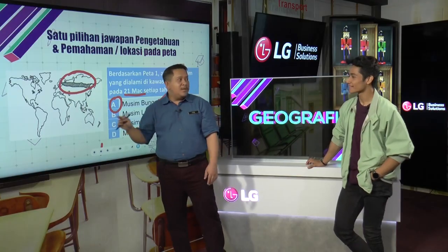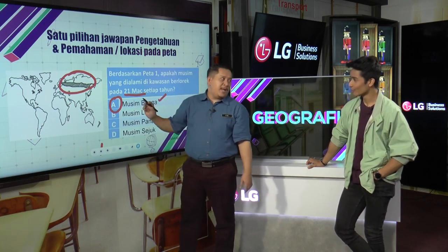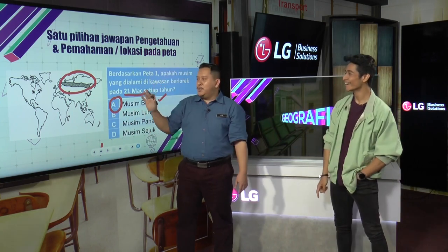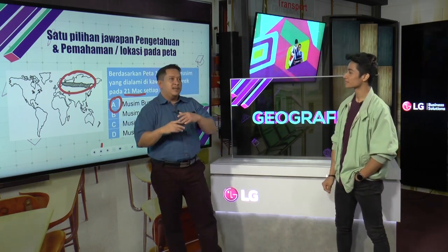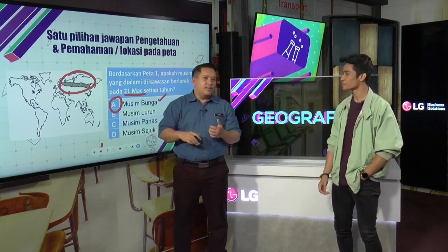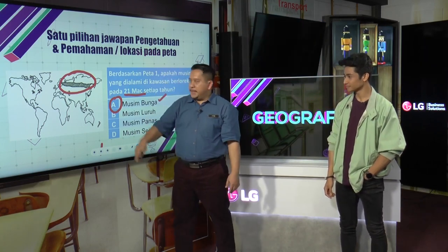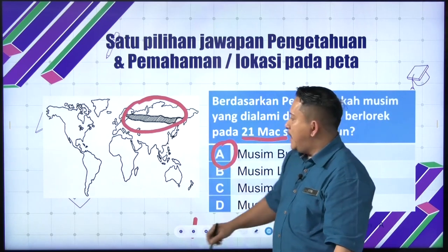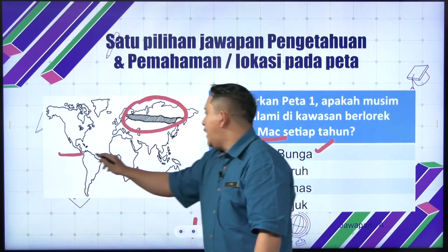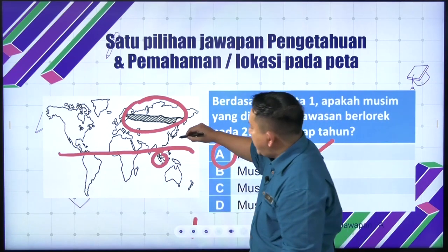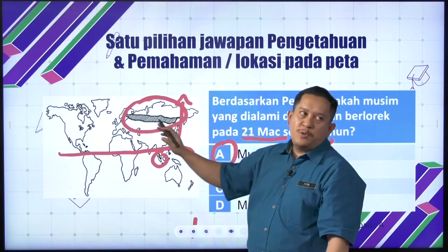Tapi kat Malaysia ada juga musim bunga — musim bunga durian. Musim bunga kita tengok yang adanya musim sejuk winter. Kalau kita pergi ke Istanbul, kita boleh nampak ada bunga tulip dan salji. Jadi ia tidak berlaku di negara kita, tapi berlaku di negara-negara di bahagian atas. Negara di atas ni, contohnya Malaysia di sini, semua mengalami kejadian empat musim.